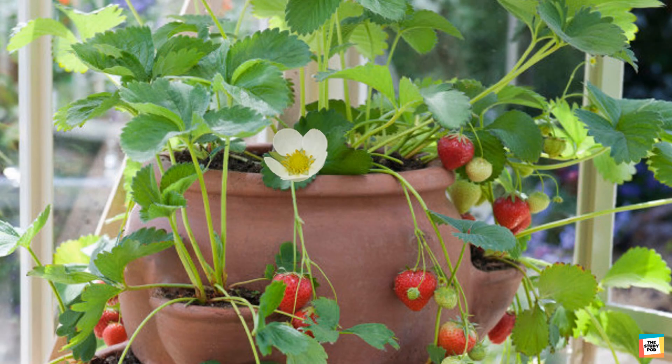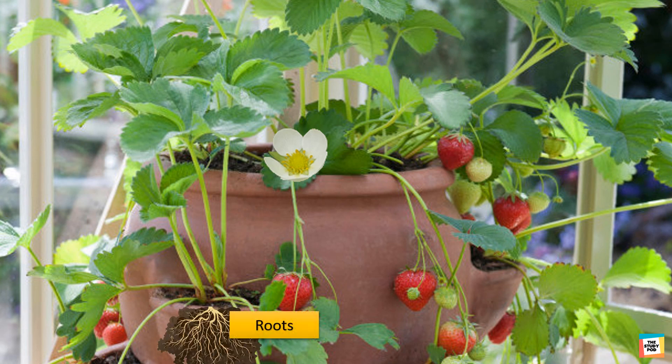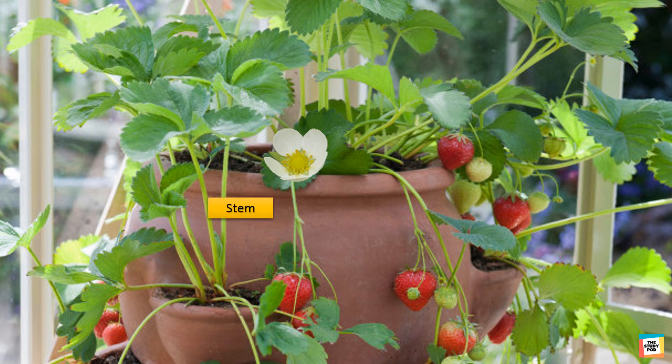Let's take an example of a strawberry plant. There are five parts of a plant: roots, stem, leaf, flower, and fruit.